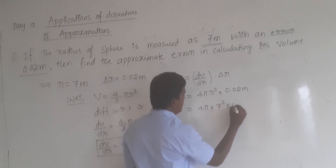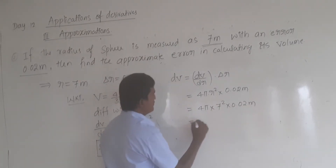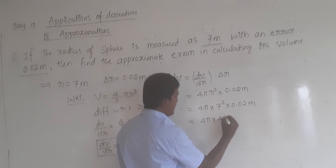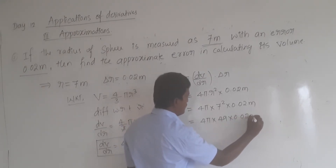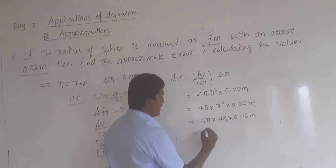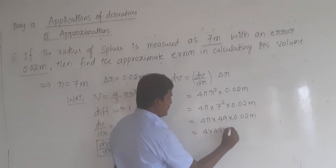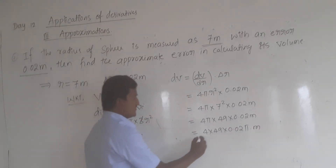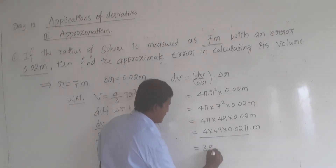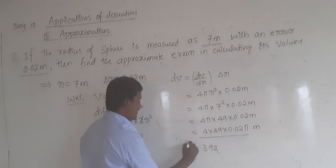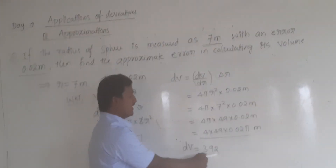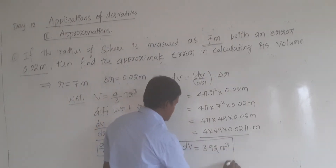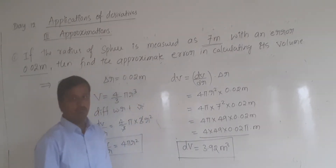Substituting: 4 pi into 7 squared into 0.02 meter. 7 squared is 49, so 4 into 49 into 0.02 pi. After simplification we are getting 3.92. So dV is equal to 3.92 pi, where V is nothing but volume — volume is always in cube units. Therefore our answer is dV is equal to 3.92 pi meter cubed.